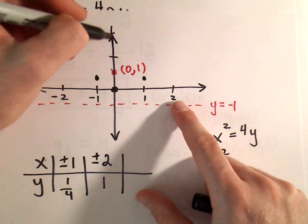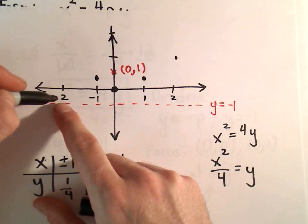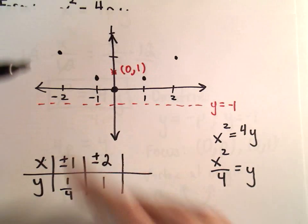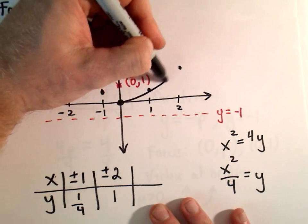We said at positive 2, we'll be at the y coordinate of 1. Likewise, when x equals negative 2, y will equal positive 1. Now we can just try to make it look like a parabola.